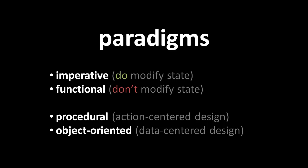In programming, paradigm refers to a fundamental approach, a style, of considering and solving problems. Most programming follows either an imperative paradigm or alternatively a functional paradigm, and at the same time most programming follows either a procedural paradigm or alternatively an object-oriented paradigm.